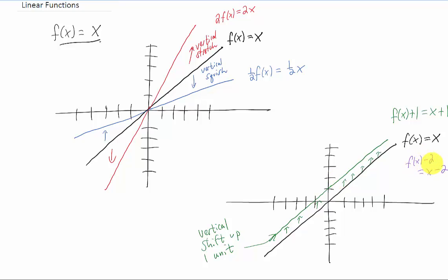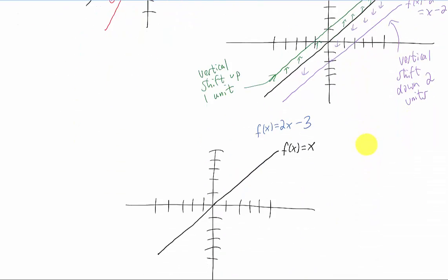And what if we subtracted 2 from this function? Well, what happens is every y value is replaced by a y value that's 2 units lower. We call this a vertical shift down 2 units. Okay, let's take a look at another graph.